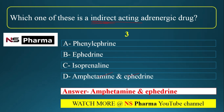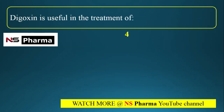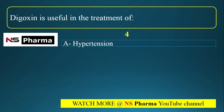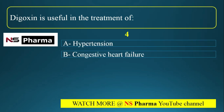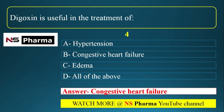Question 4: Digoxin is useful in the treatment of — (a) hypertension, (b) congestive heart failure (CHF), (c) edema, (d) all of the above. Digoxin is used in CHF. It acts by inhibiting the sodium-potassium ATPase enzyme of myocardial fibers.